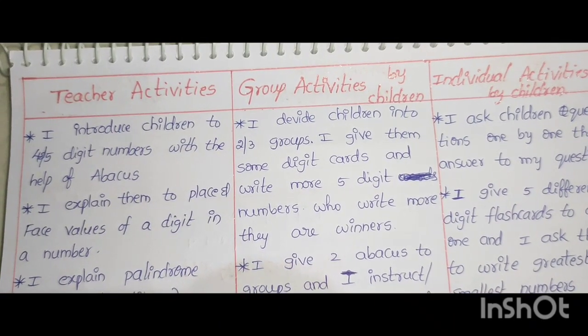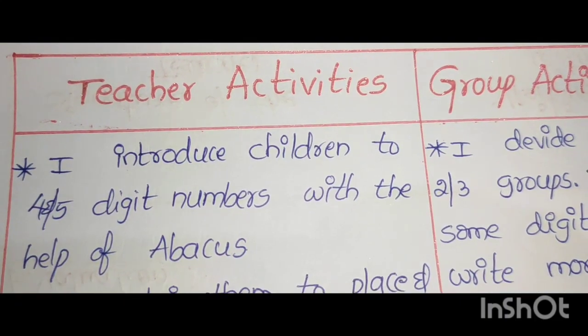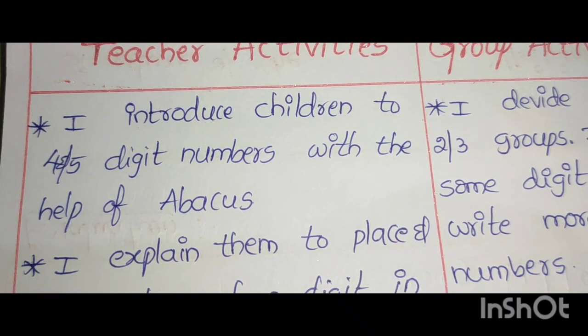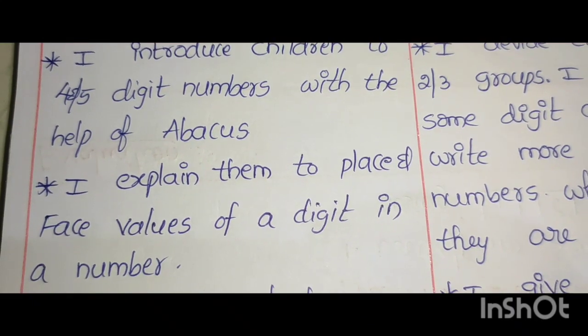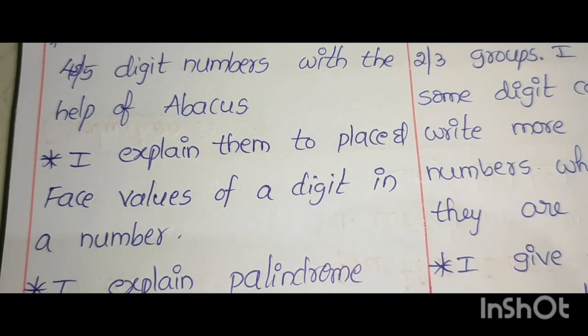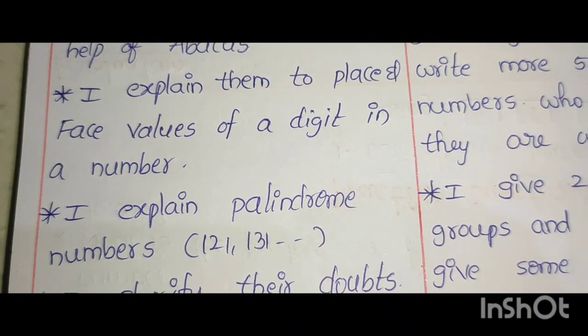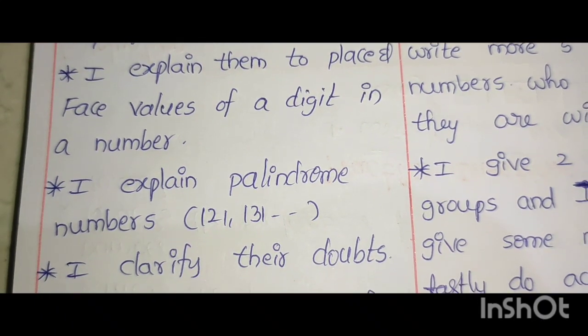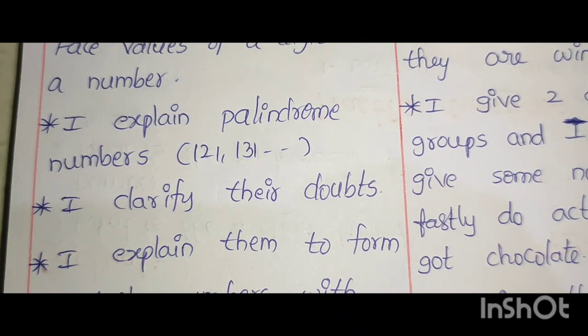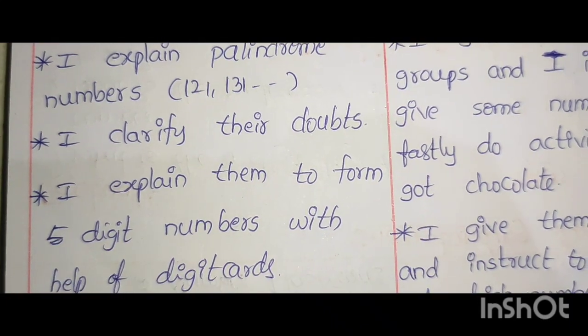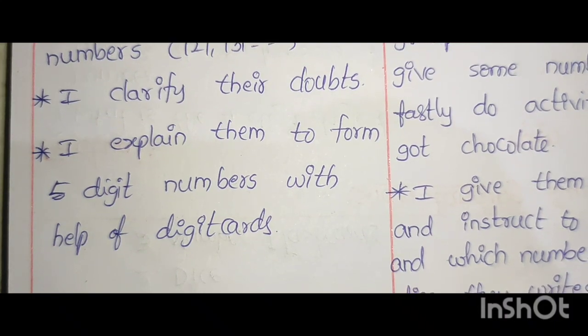Next activities. Teacher activities: I introduce children to 4 and 5 digit numbers with the help of Abacus. I explain them place and face values of a digit in a number. I explain palindrome numbers 121, 131. I clarify their doubts. And I explain them to form 5 digit numbers with the help of digit cards. This is the teacher activities.